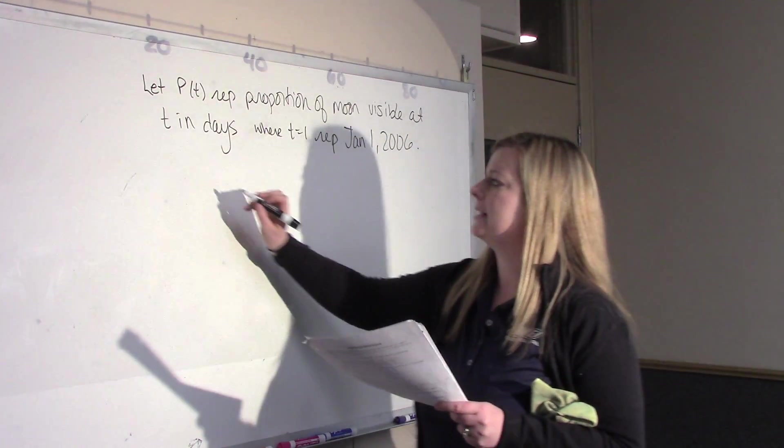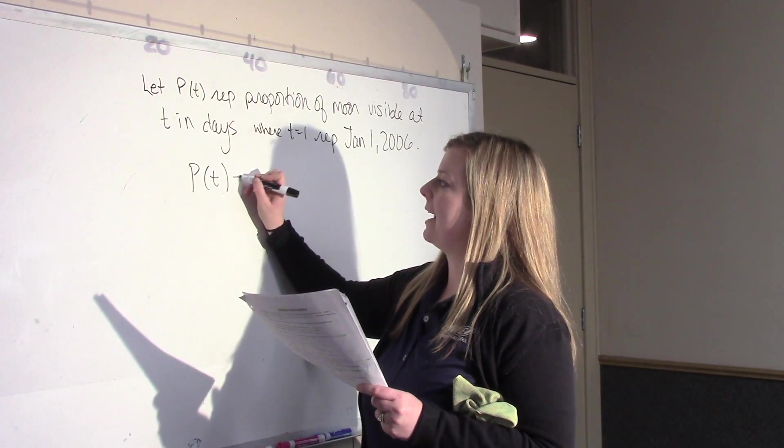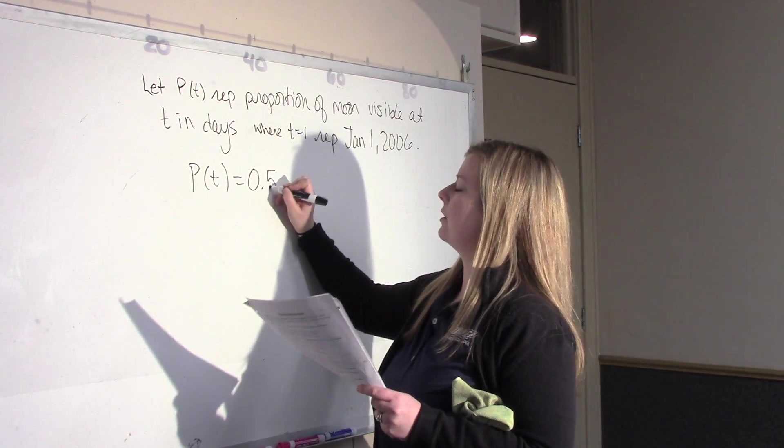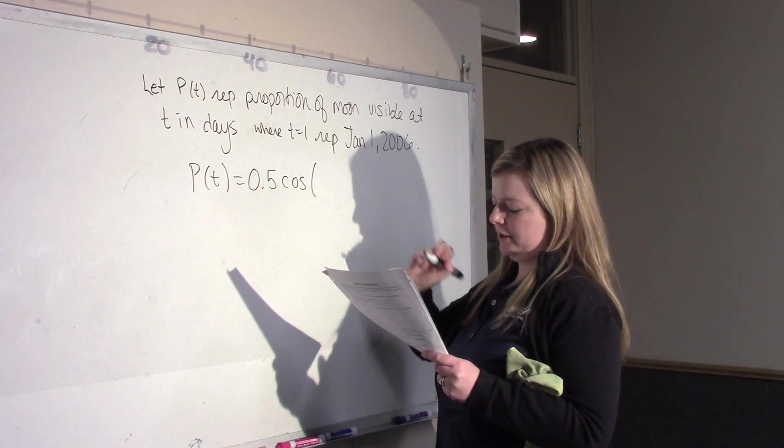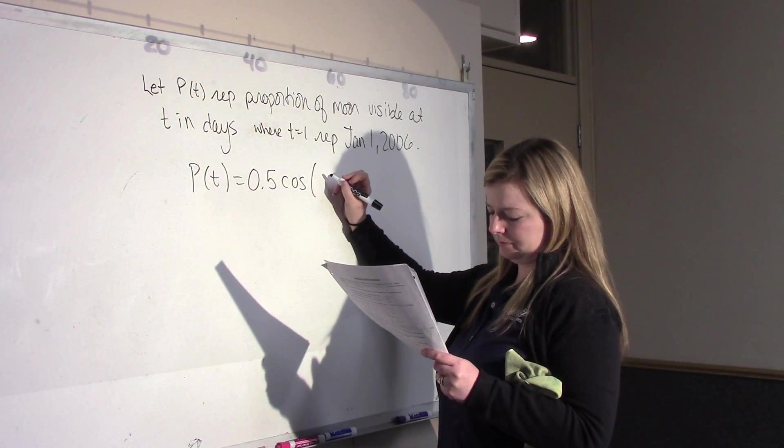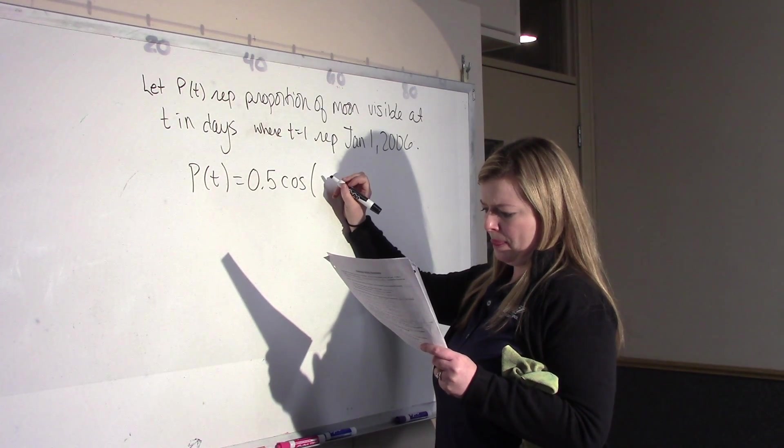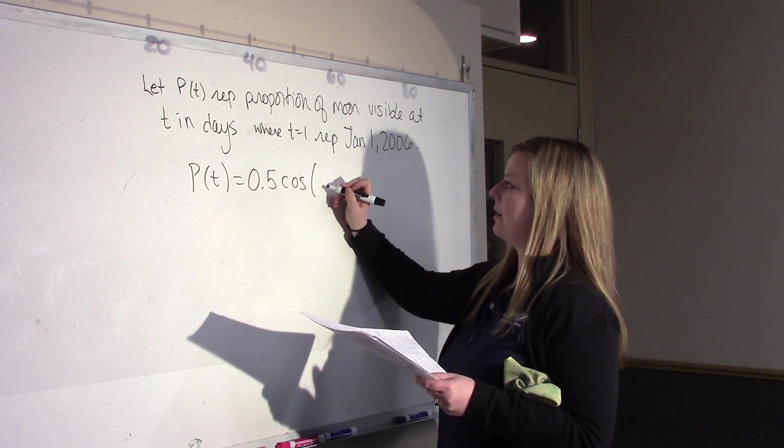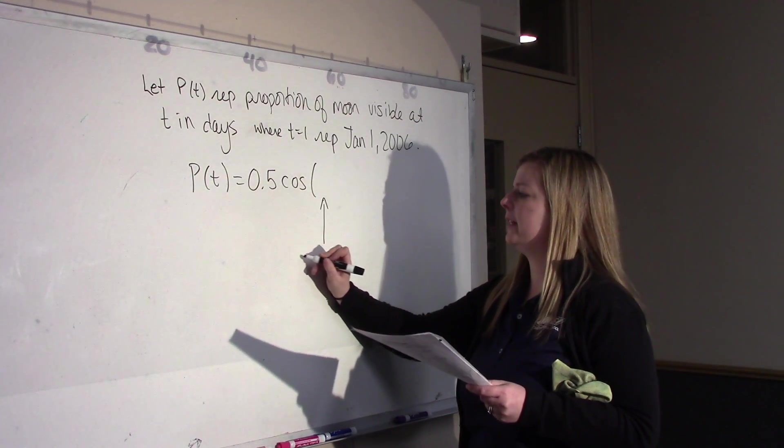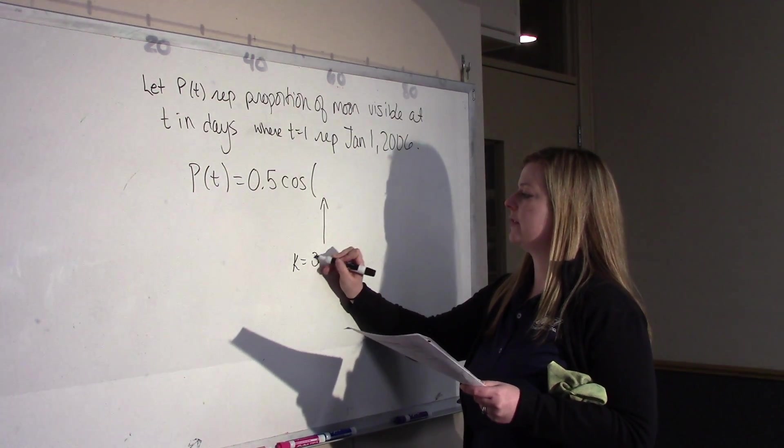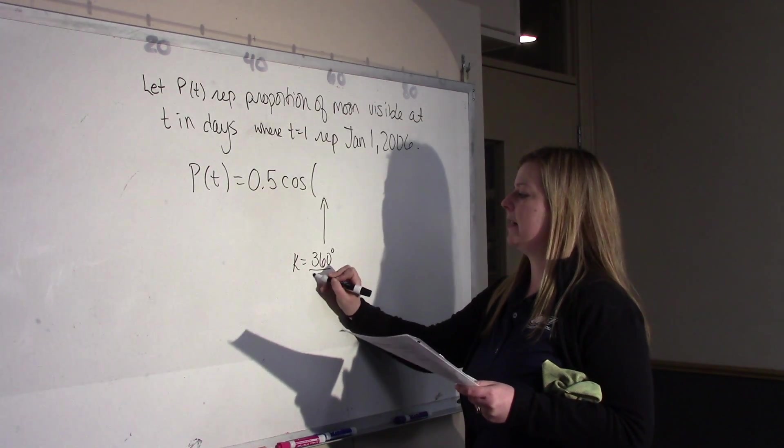So P at T equals, I've decided to use cos. My A value is 0.5 cos of, now my K value is 2. Oh, sorry, no, I don't know what my K value is. So, what is my K value? Well, my period, my K value is just 360 days divided by the period.